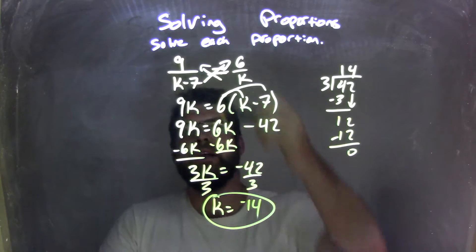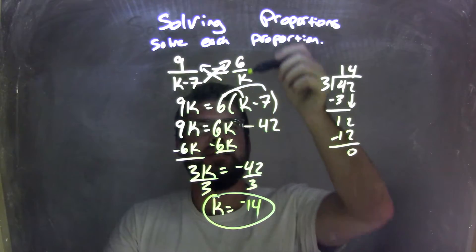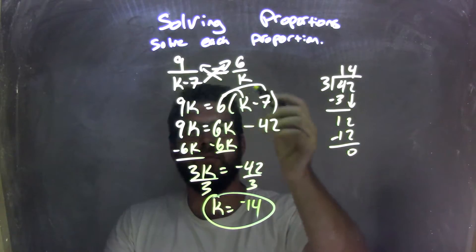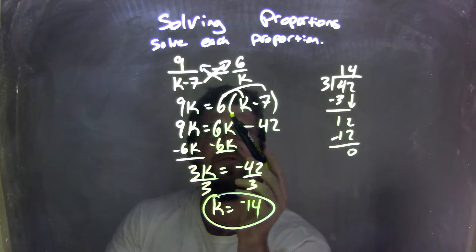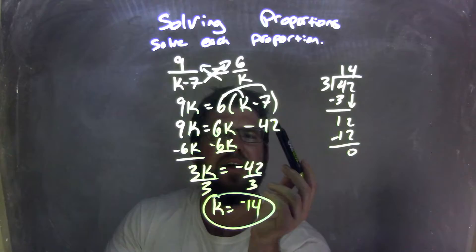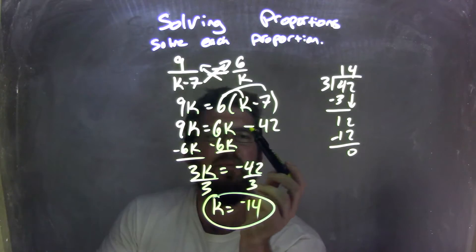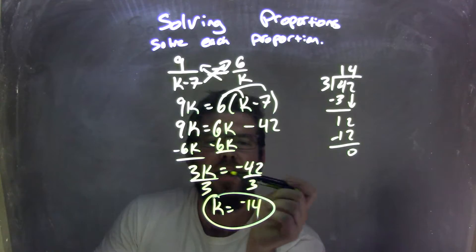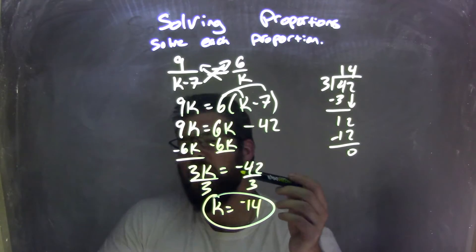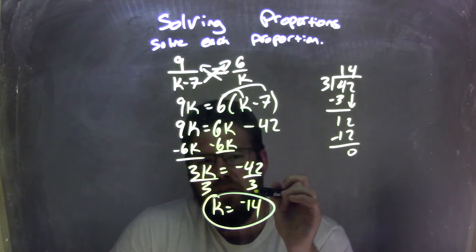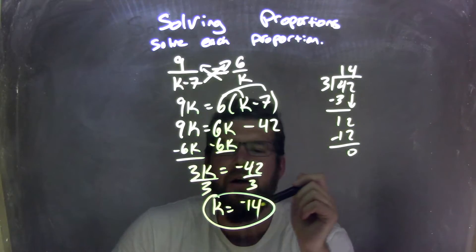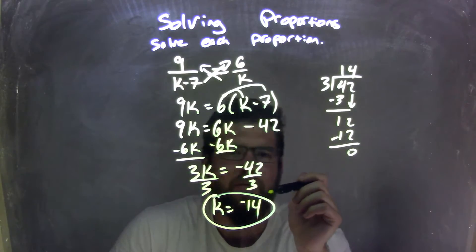So, let's recap. We had 9 over k minus 7 equals 6 over k. I cross-multiplied, giving me 9k on the left equals 6 times k minus 7 on the right. I then distributed the 6 across to the k and then the 7, giving me 6k minus 42. So, subtract the 6k to both sides, giving me 3k equals negative 42. And then I divided by 3 to get k by itself, which gave me my final answer here, after doing some long division, of k equals negative 14.